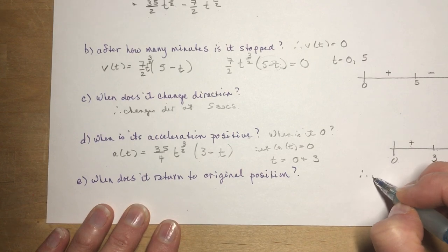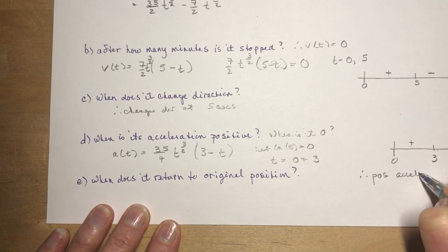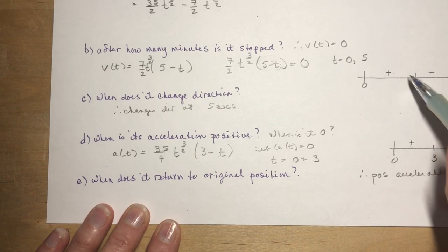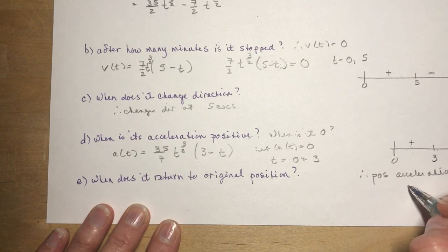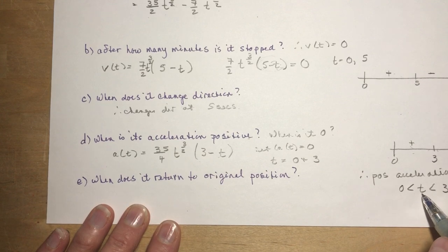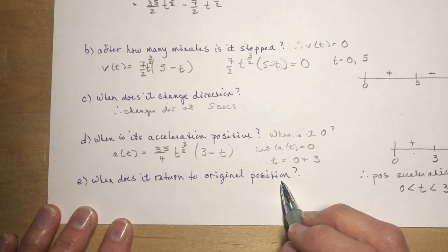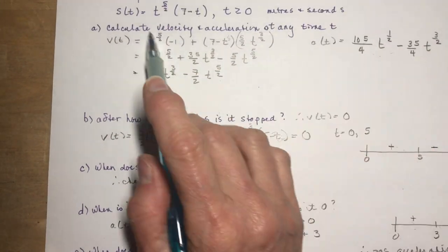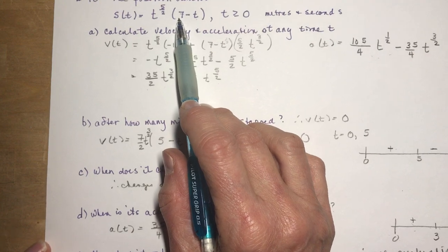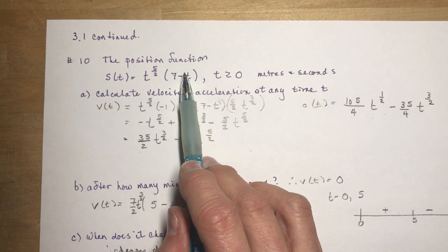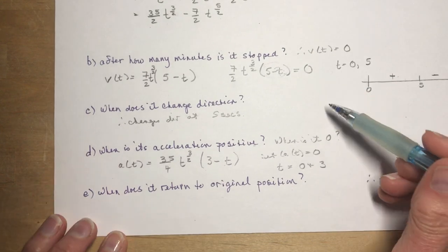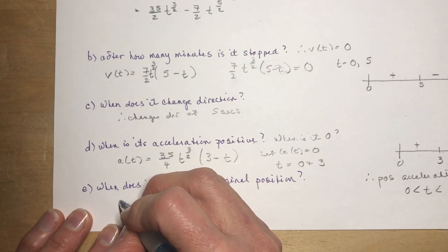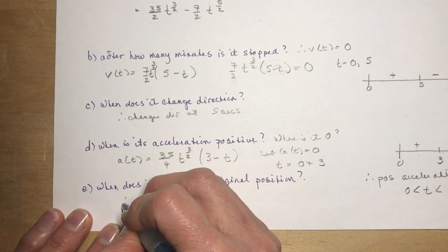So there is positive acceleration for 0 < t < 3. Remember, positive acceleration does not necessarily mean speeding up — you'd have to check the velocity signs as well. When does the object return to its original position? Looking back at the position function graph, that happens at t=0 and t=7 seconds, so no additional calculation is needed.